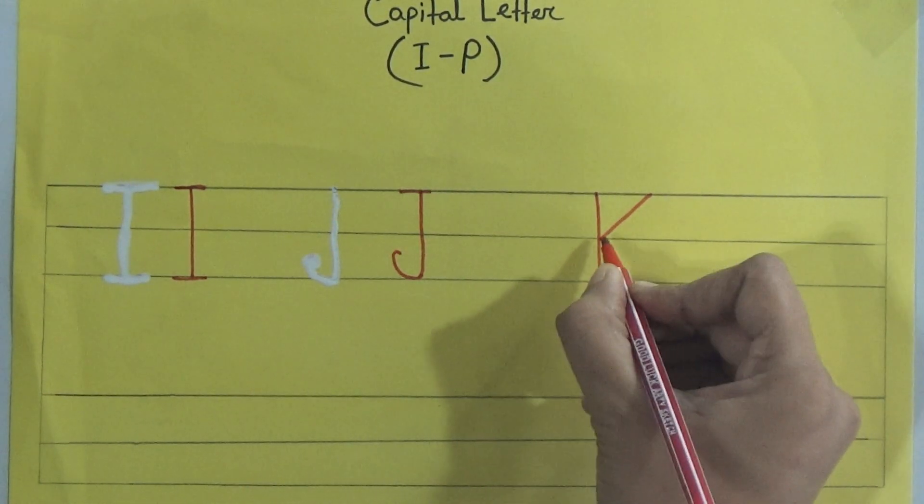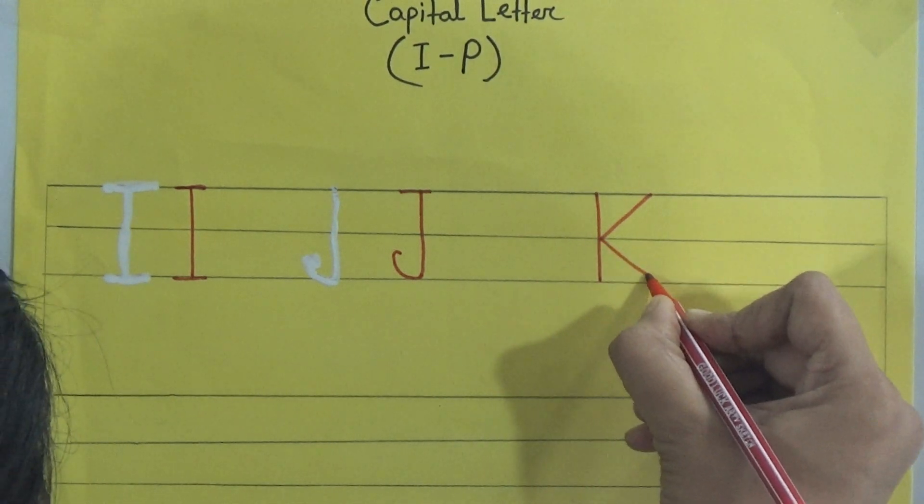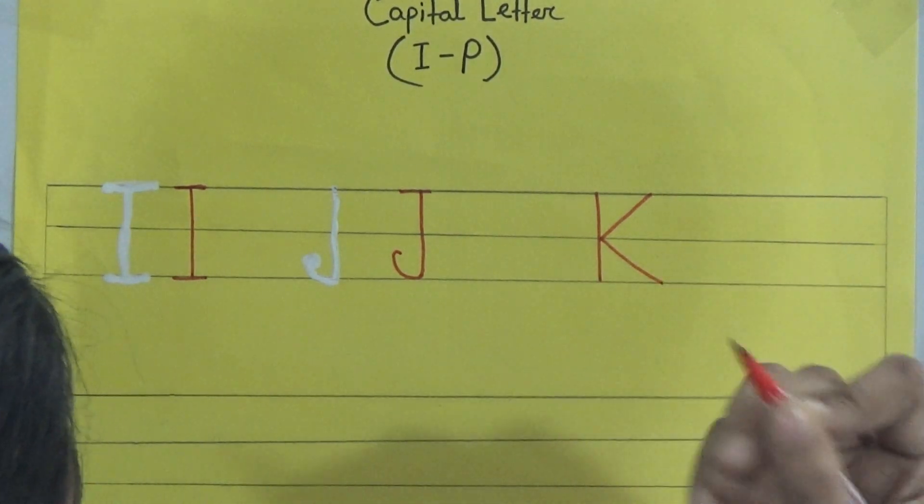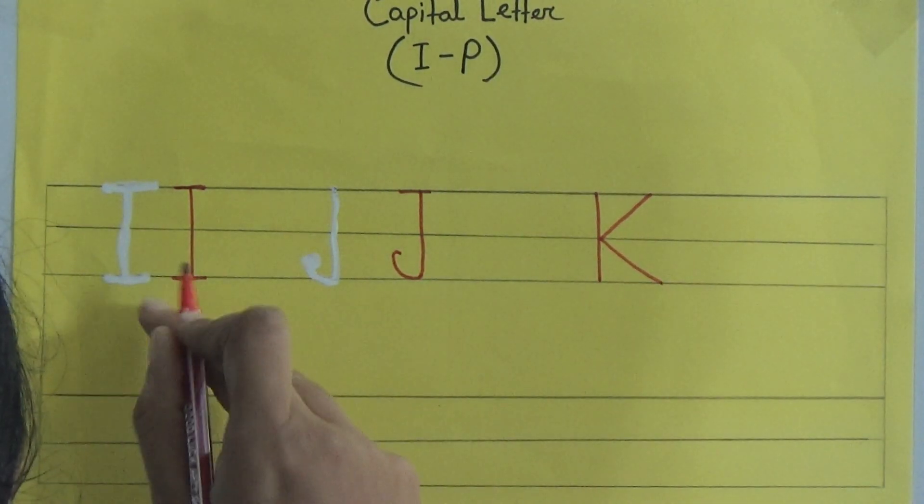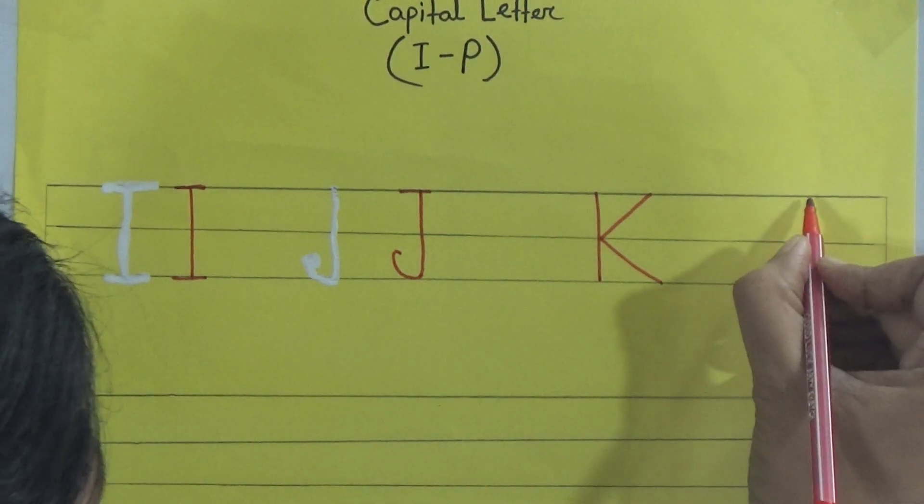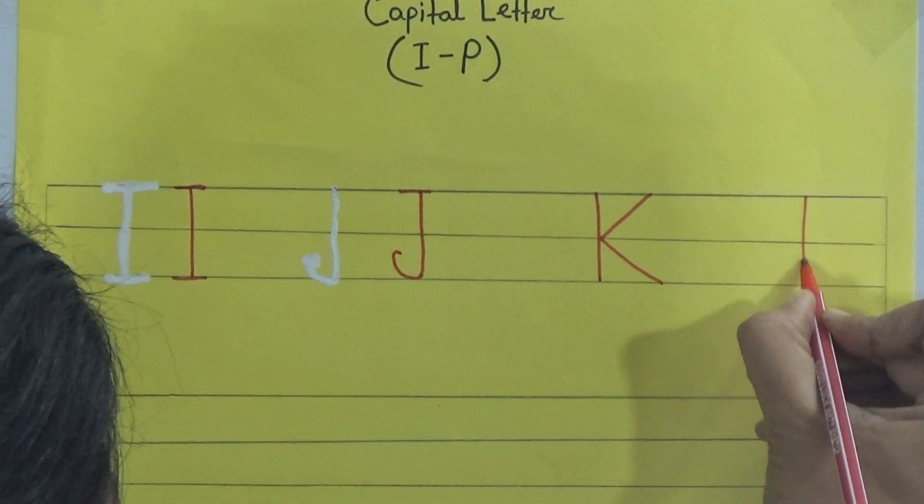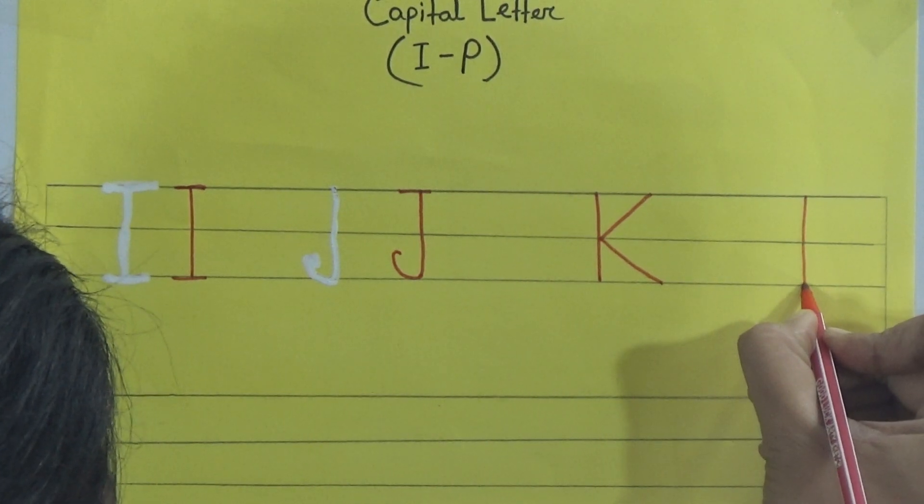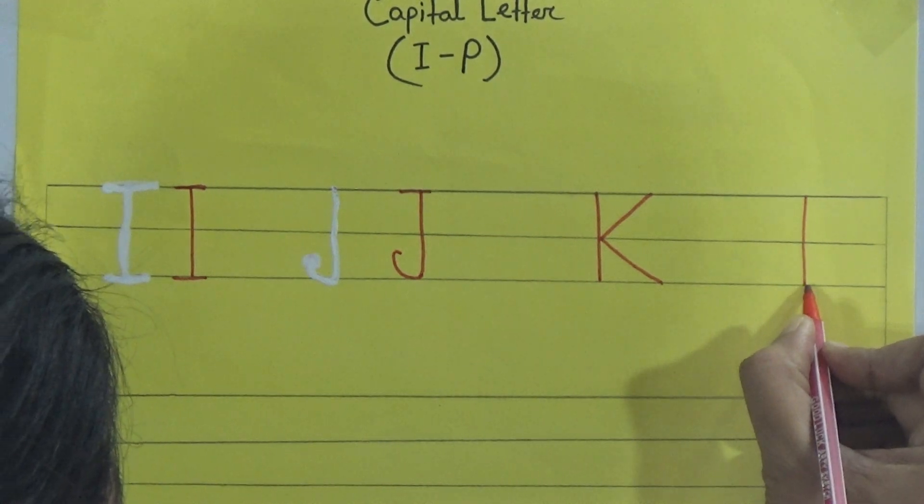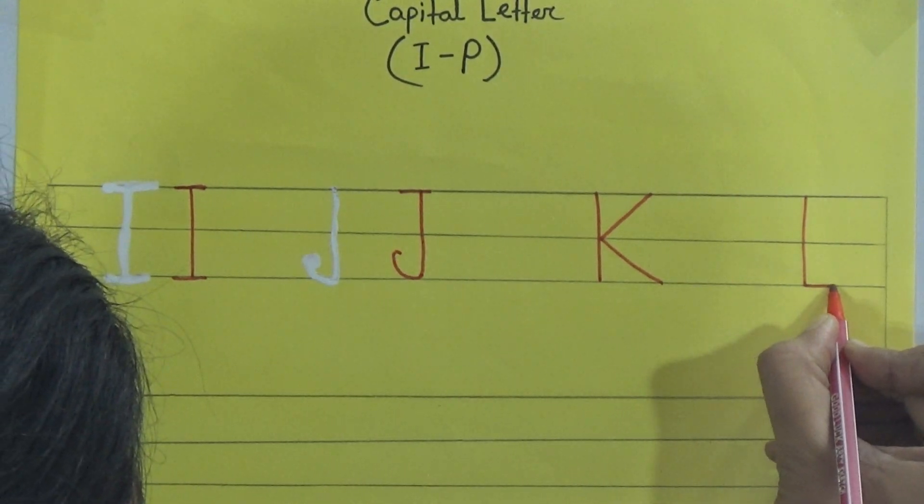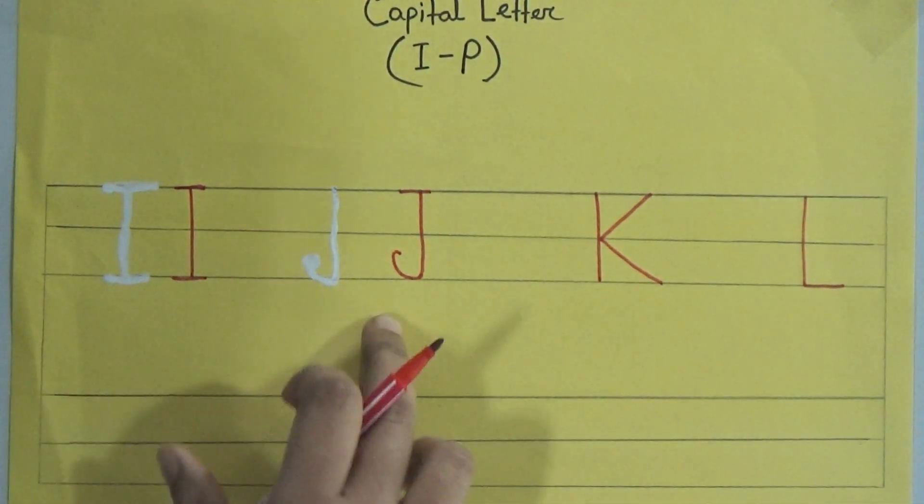To the left, and another sliding line to the left at the bottom. I, J, K, L. Another letter is L. So one standing line here, start from the top, and one from here, one slipping line, small slipping line here. So I, J, K, L.